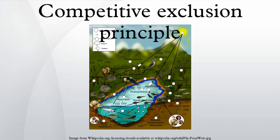In ecology, the competitive exclusion principle, sometimes referred to as Gause's law of competitive exclusion or just Gause's law, is a proposition that states two species competing for the same resource cannot coexist at constant population values if other ecological factors remain constant. When one species has even the slightest advantage over another, the one with the advantage will dominate in the long term. One of the two competitors will always overcome the other, leading to either the extinction of this competitor or an evolutionary or behavioral shift toward a different ecological niche. The principle has been paraphrased into the maxim: complete competitors cannot coexist.